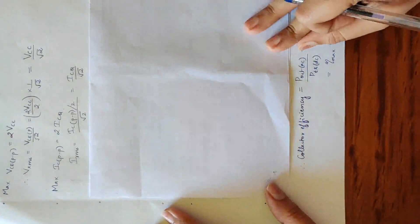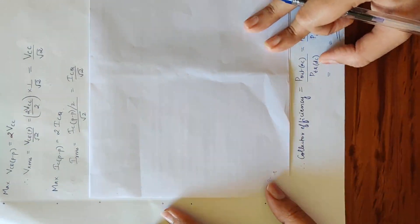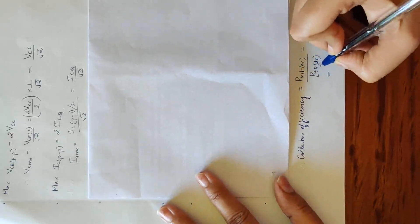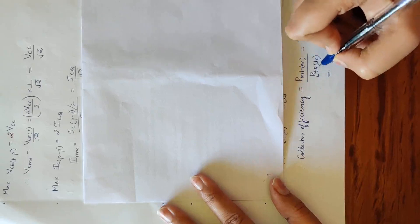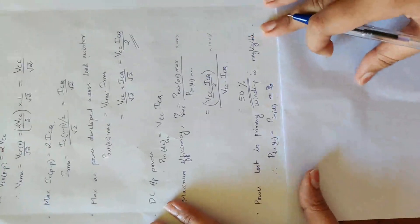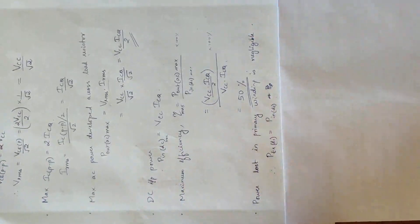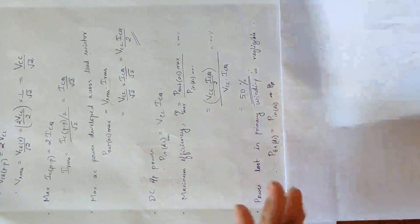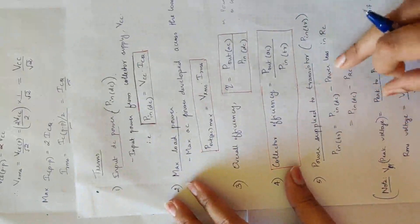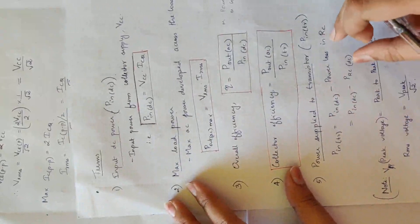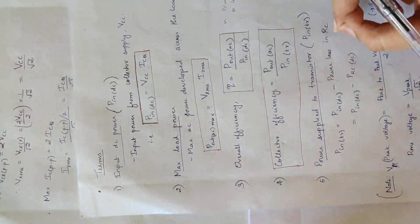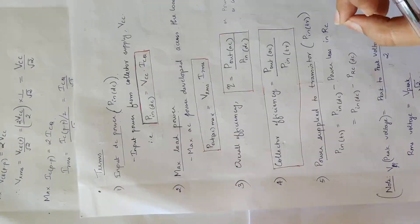Overall efficiency and collector efficiency are the same equation. Now collector efficiency equation: Pout AC divided by Ptr DC. Ptr DC is the transistor input DC power.